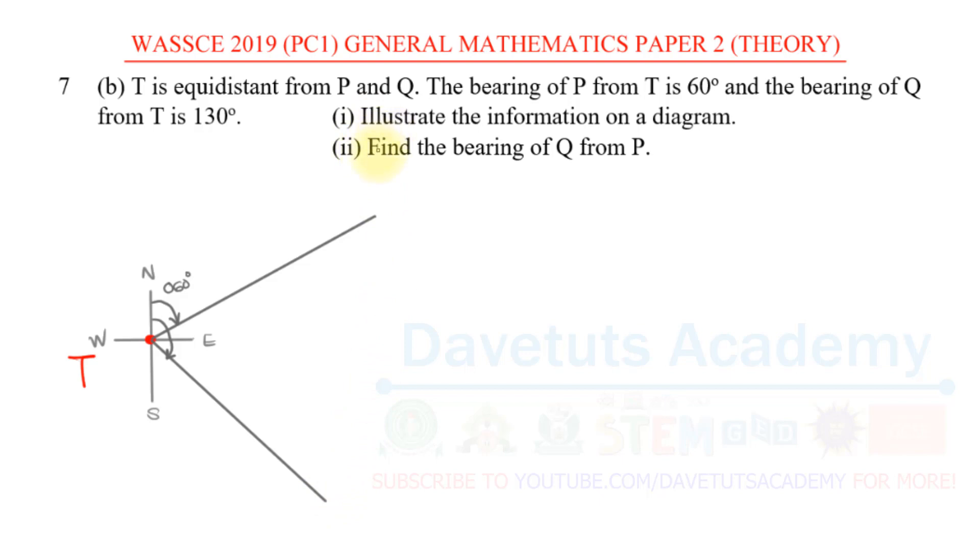And then we are giving one very crucial information that the distance between T and P and the distance between T and Q, they are equal. T is equidistant from P and Q. So if we are to label the diagram and say this is point, the first one is 60 degrees point P, and then the second one is point Q. This is the representation of the diagram, but we also need to label this correctly. This is 130 degrees.